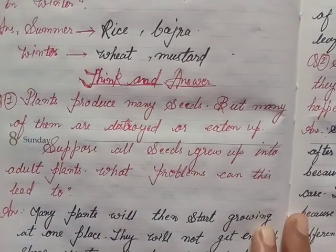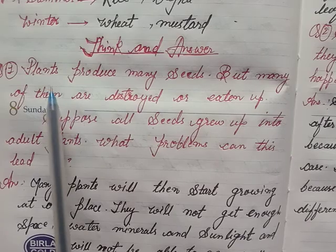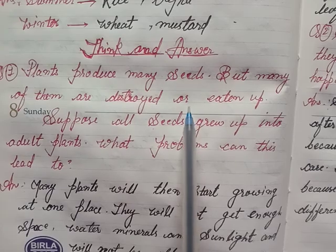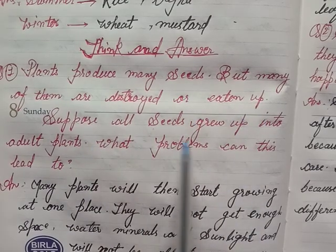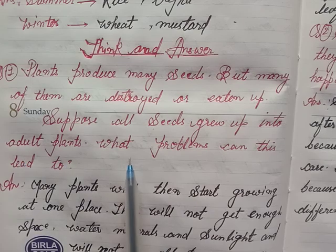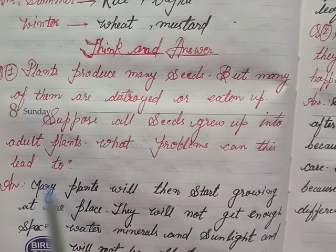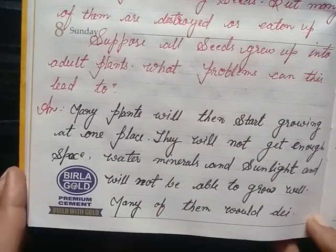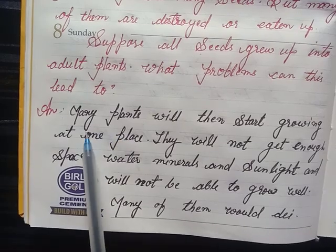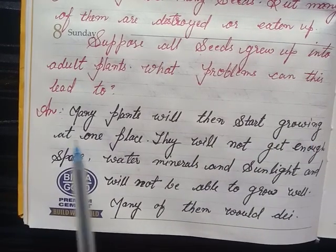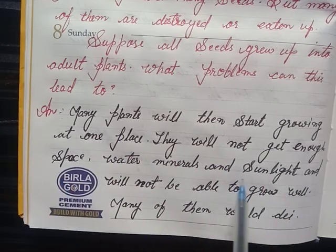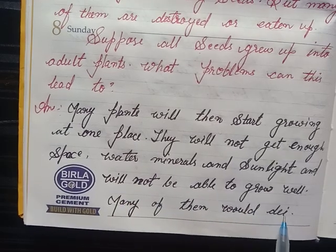Think and answer. Question 1: Plants produce many seeds but many of them are destroyed or eaten up. Suppose all seeds grew up into adult plants. What problems can this lead to? Answer: Many plants will then start growing at one place. They will not get enough space, water, minerals, and sunlight and will not be able to grow well. Many of them would die.